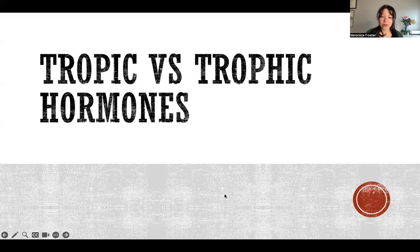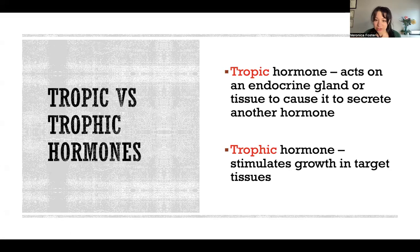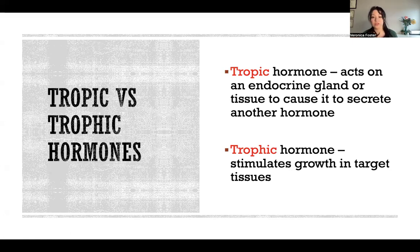Hello, in this video I'm going to explain the difference between tropic and trophic hormones, and I'll give you a few examples. Tropic hormones are hormones that act on an endocrine gland or some kind of endocrine tissue somewhere in the body to cause it to secrete another hormone. So a tropic hormone is a hormone that causes the release of another hormone somewhere else in the body.